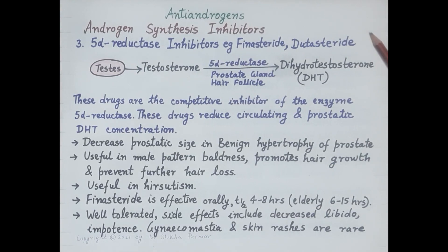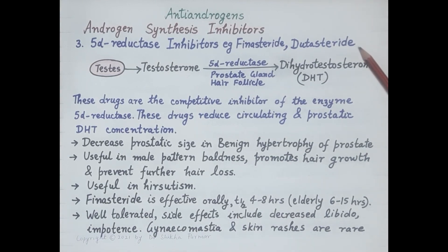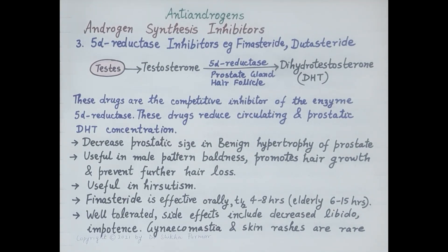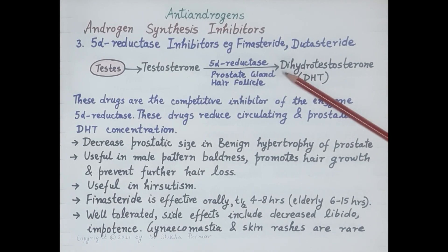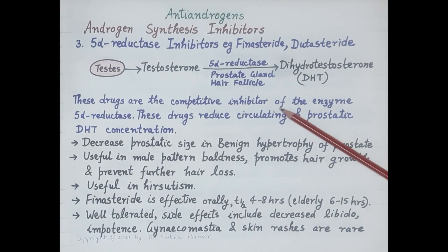The third type of androgen synthesis inhibitors are 5-alpha reductase inhibitors, for example finasteride. Testosterone produced in the testes is converted to its more potent androgenic metabolite dihydrotestosterone in organs like the prostate gland and hair follicles by the enzyme 5-alpha reductase. These drugs are competitive inhibitors of the enzyme 5-alpha reductase.